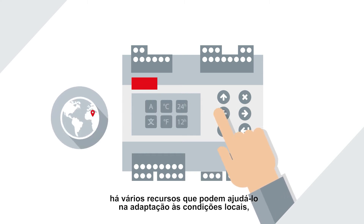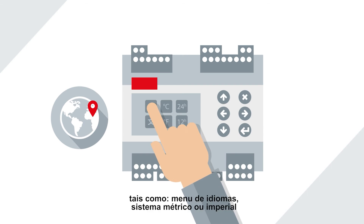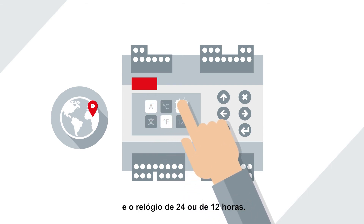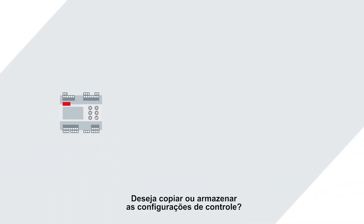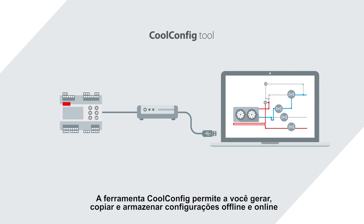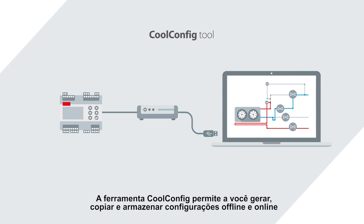Features include a multi-language menu, metric or Imperial units, and a 24 or 12-hour clock. Want to copy or store control settings? No problem — the cool config tool lets you generate, copy, and store settings offline and online across multiple EKE 400 units.